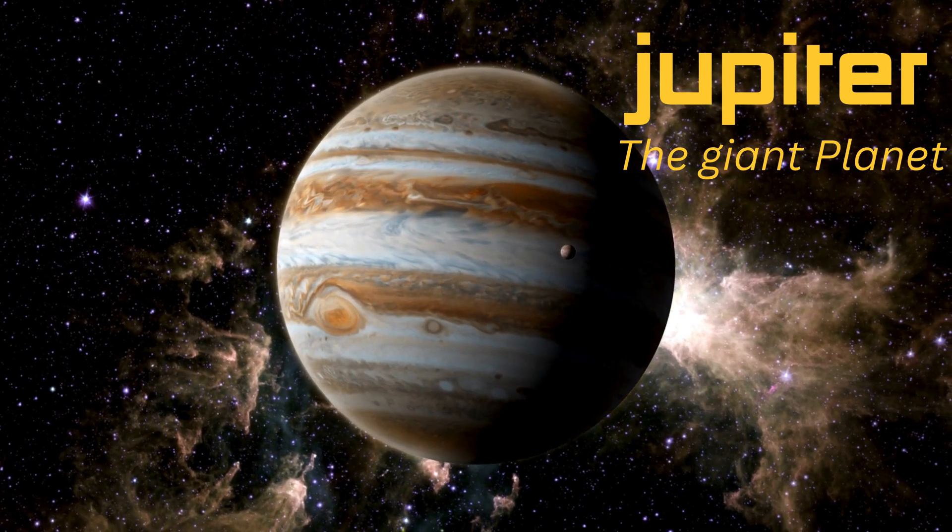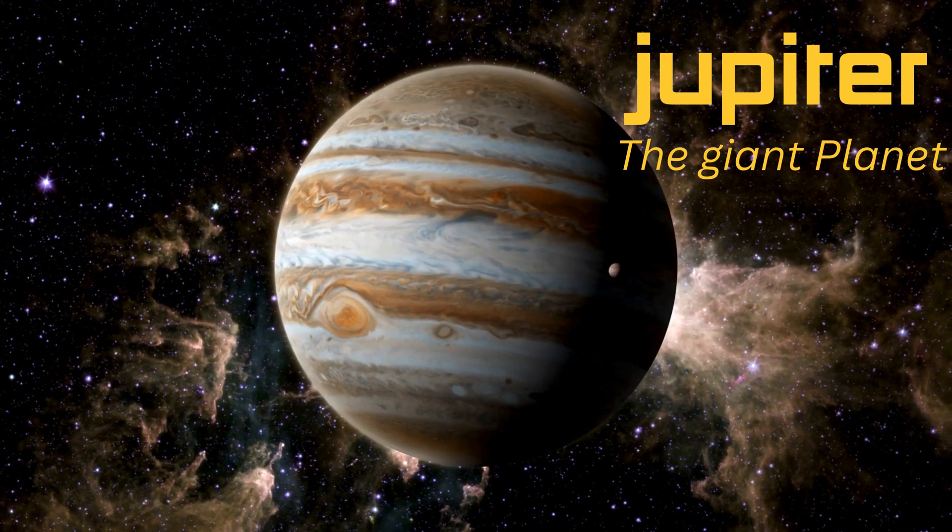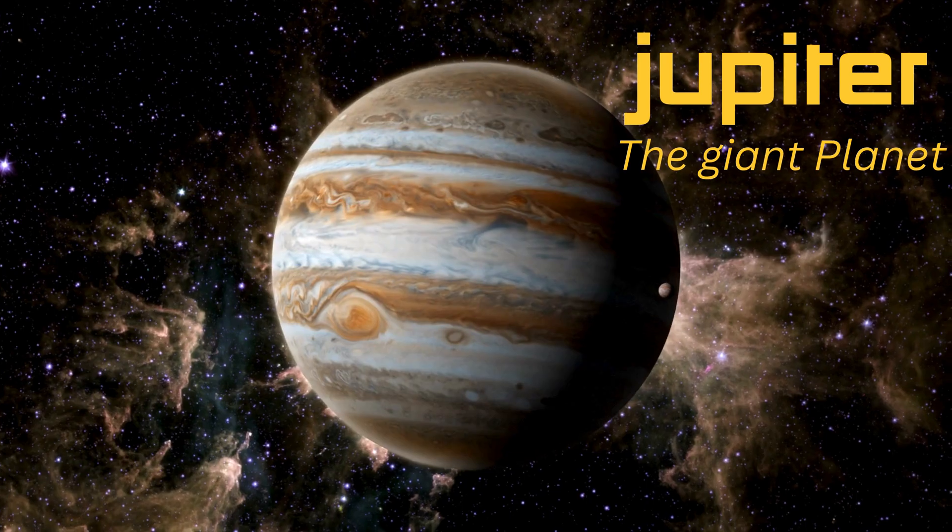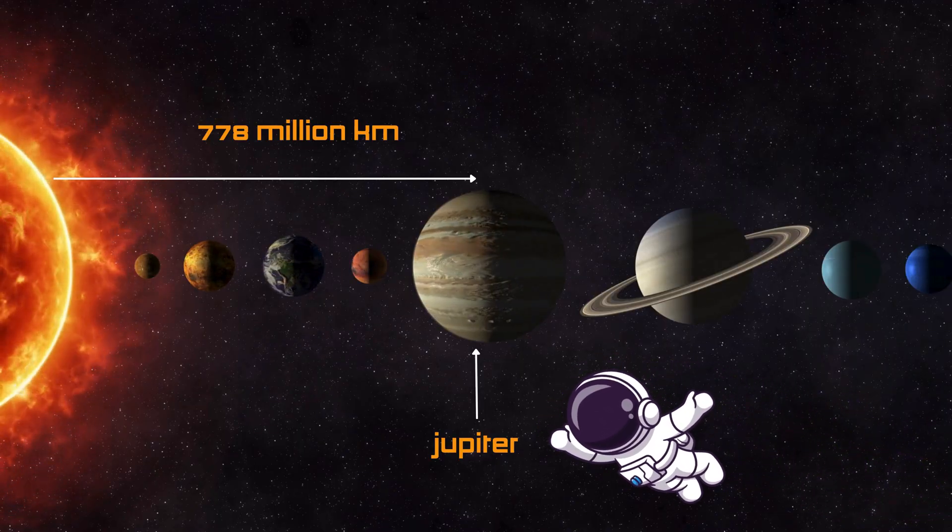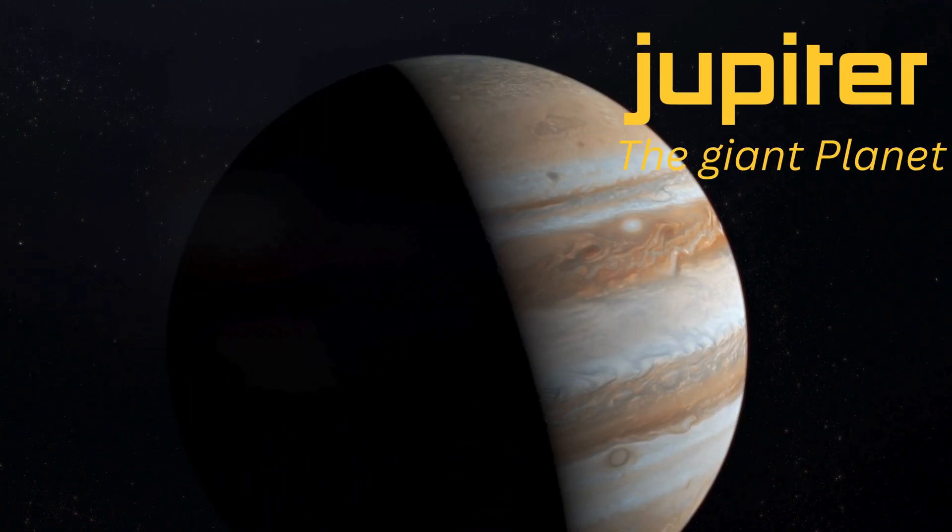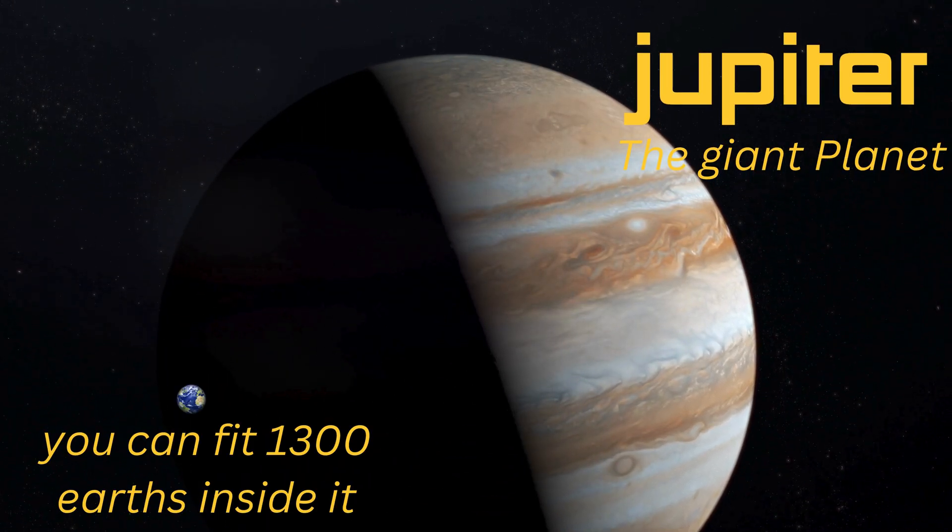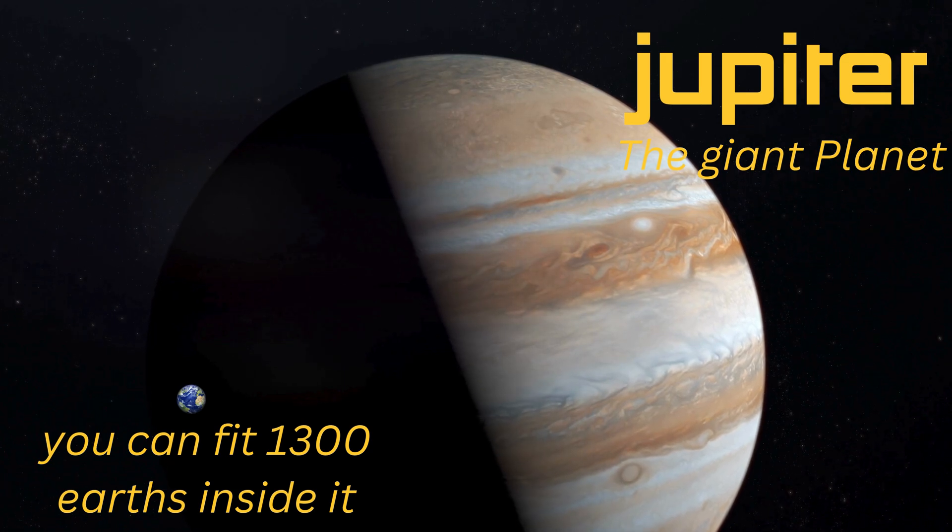Whoa! Here comes Jupiter! This is the biggest planet in our solar system. Jupiter is about 484 million miles, 778 million kilometers from the sun. It's so huge, you could fit 1,300 Earths inside it.